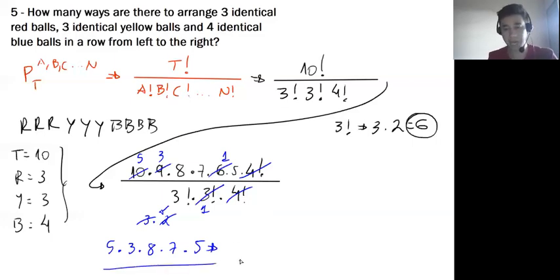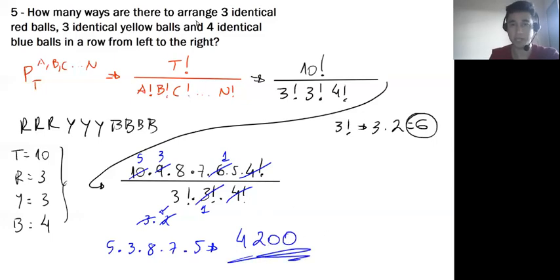We have five times three times eight times seven times five. When you multiply all these together, the result is 4,200 possibilities to make this arrangement.